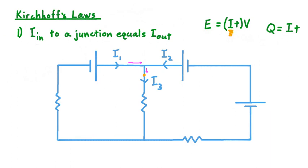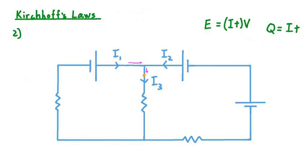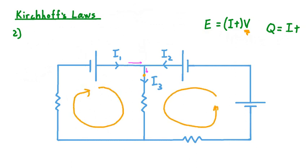That's the first of Kirchhoff's laws covering current in a circuit. The second law, which also has to do with energy conservation, describes voltage. Unlike Kirchhoff's current law where we look at junctions, for the voltage law we consider loops in a circuit. One of those loops is here on the left and another is here on the right. Each one of these loops has a direction associated with it — the arrow points in the direction that charge flows through that loop. In the loop on the left, charge flows clockwise, while in the loop on the right, charge moves counterclockwise. The direction of charge flow has to do with the direction of voltage sources in these loops.